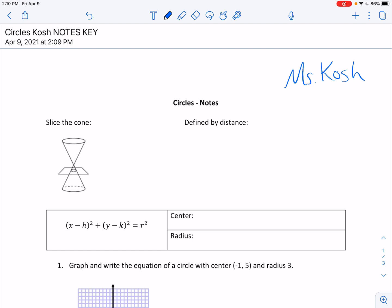First of all, every conic section can be defined both by how we slice a cone and in terms of distance. Notice if I have what's actually two cones, one cone right on top of the other, and if I slice it where it's parallel to the base, I get a circle. That's how when we slice the cone it's parallel to the base.